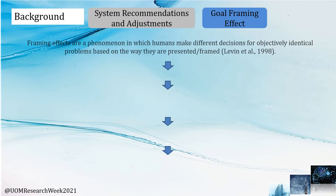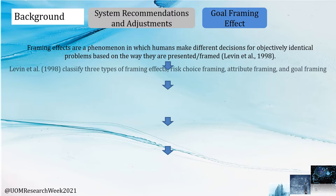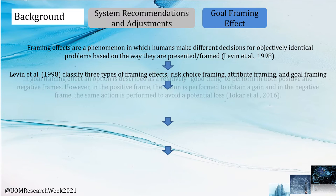The goal framing effects are a phenomenon in which humans make different decisions for objectively identical problems based on the way they are presented. Levin et al. 1998 classified three framing effects, namely risk choice framing, attribute framing, and goal framing.